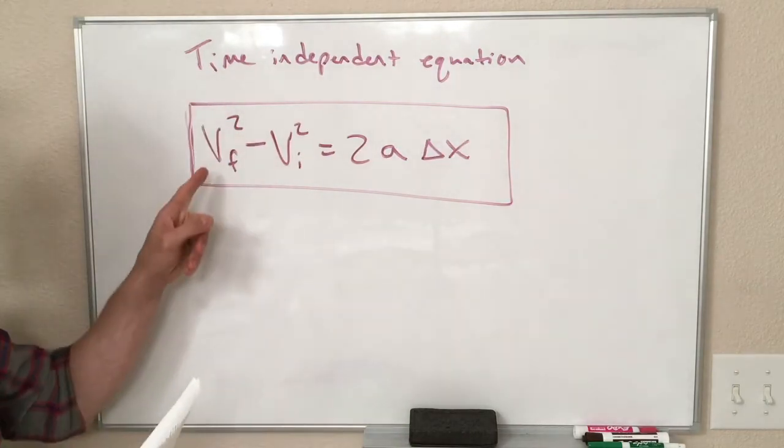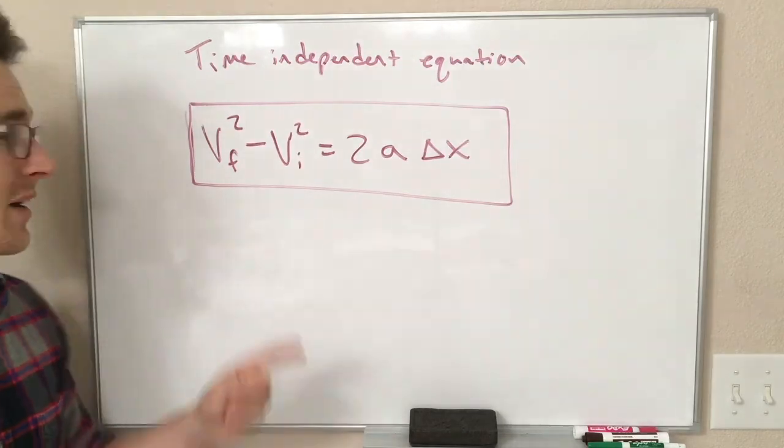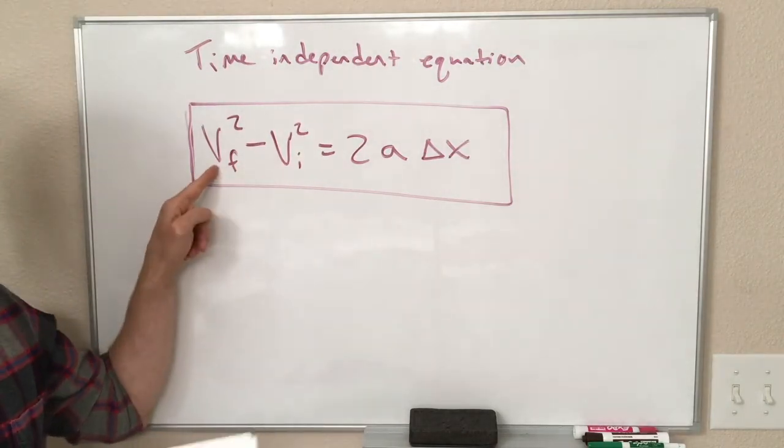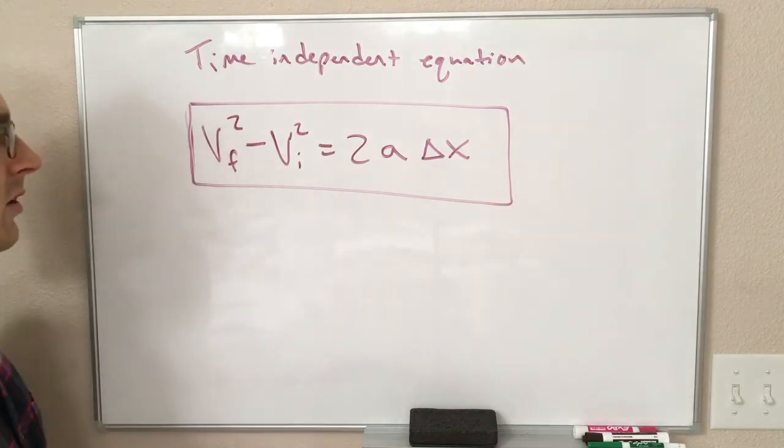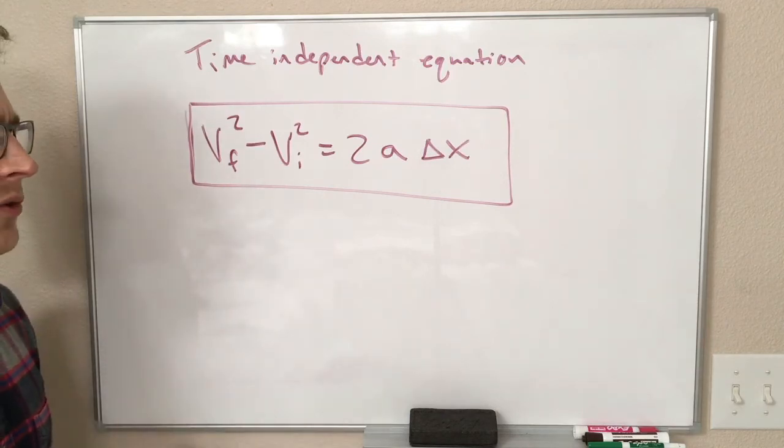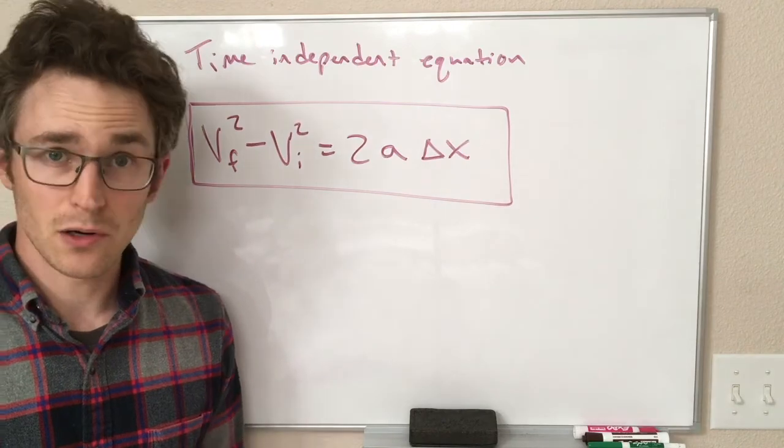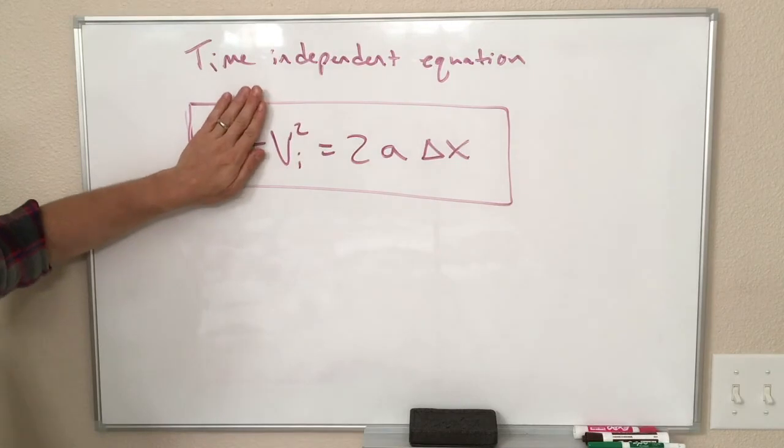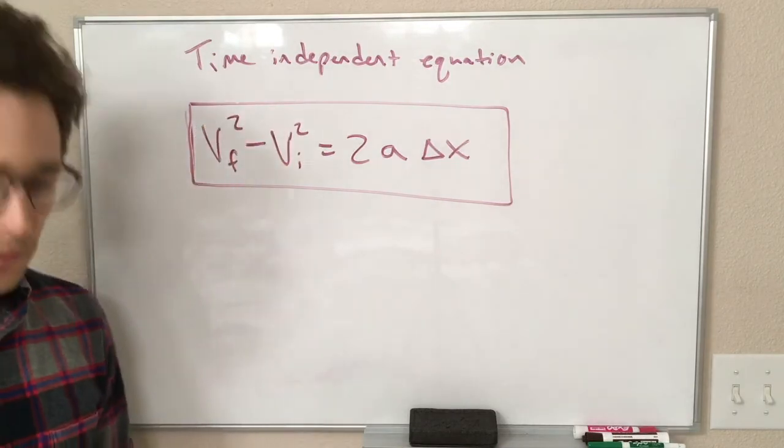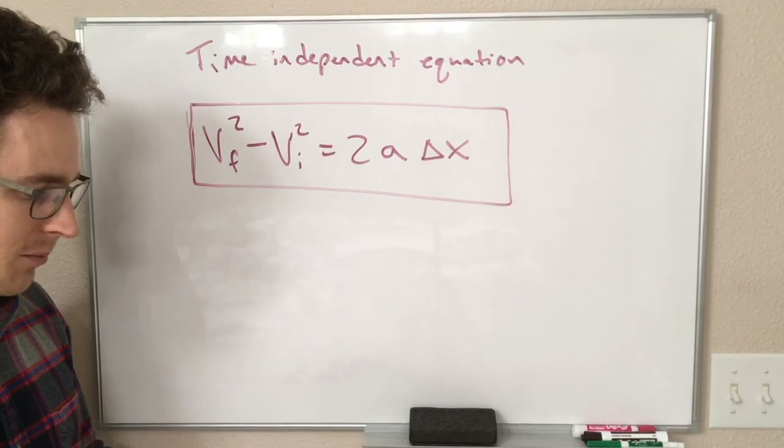And this equation is very useful if we don't know how long something takes, but we know how fast it was going at the beginning, and we know how fast it was going at the end, we can plug those numbers in and the time never needs to come into it. This equation turns out to be very useful, especially when your initial or your final velocity is 0, because then you can plug 0 into one of those and the equation becomes much simpler. So we'll see more examples using this next time.